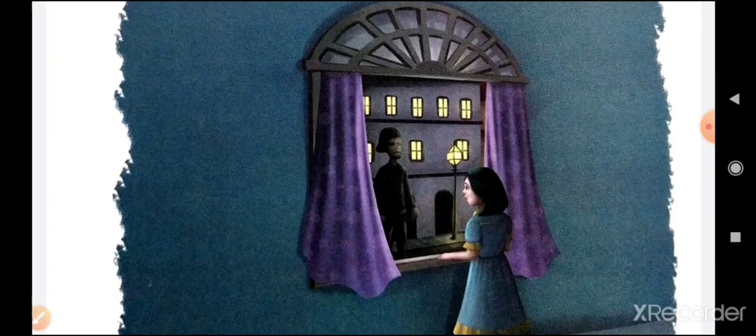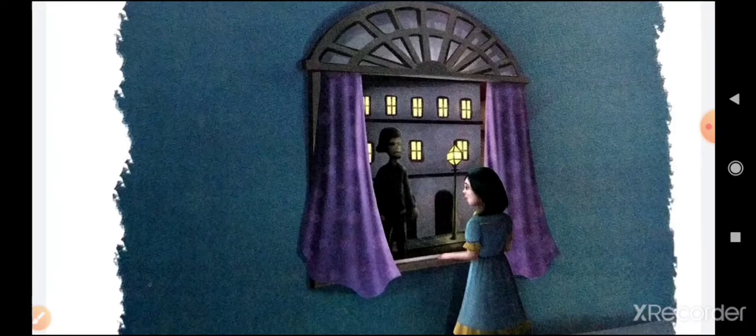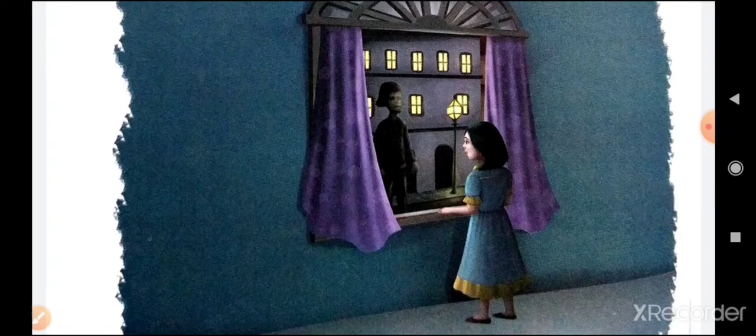You can see in the picture there's a tall, dark, and thin figure outside the window in the night, and there the girl Sophie is standing and looking at that figure.